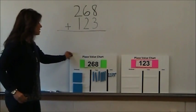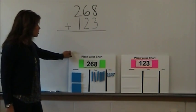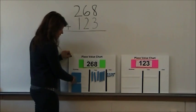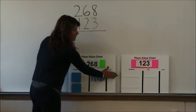So a three-digit number, such as 268, has two hundreds, six tens, and eight ones.